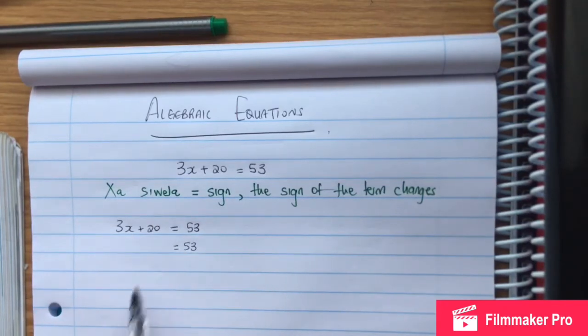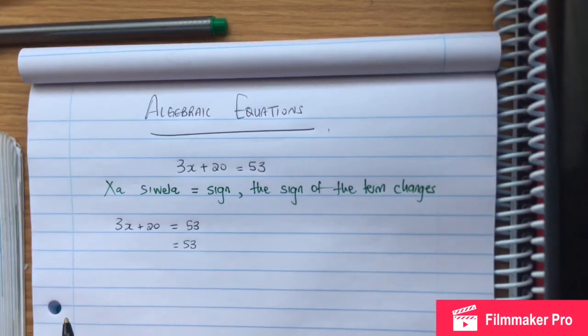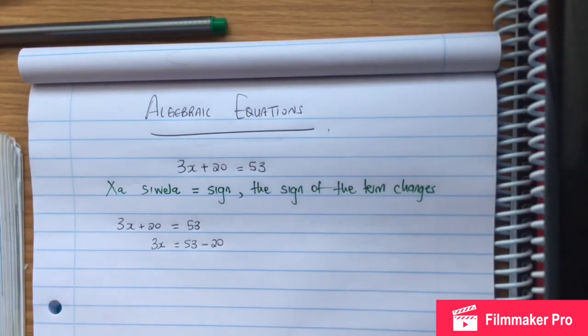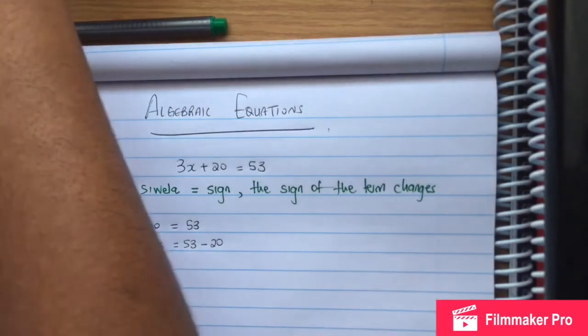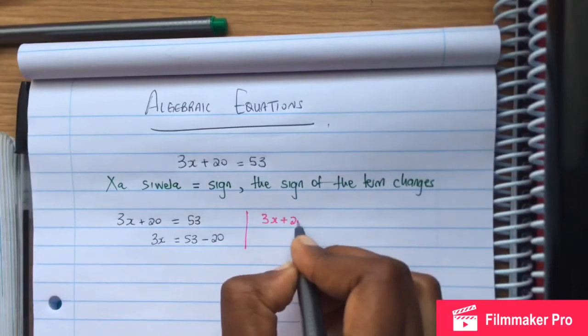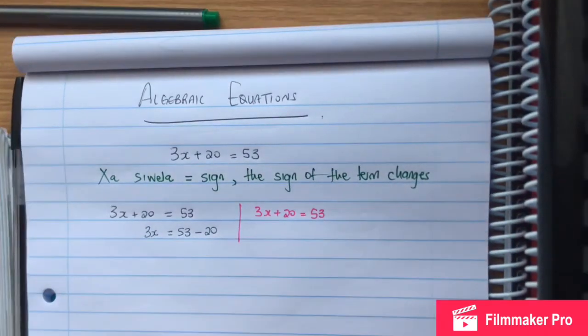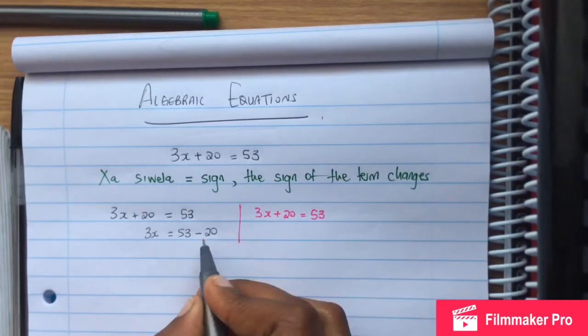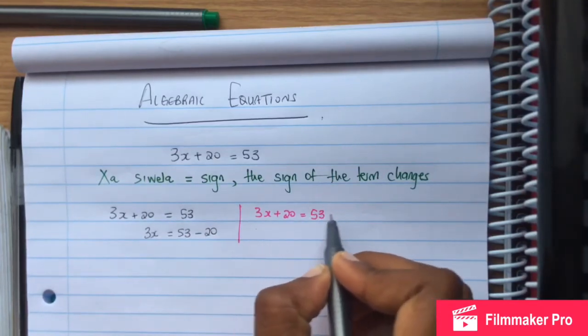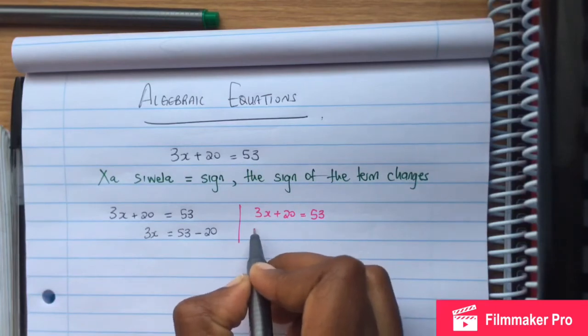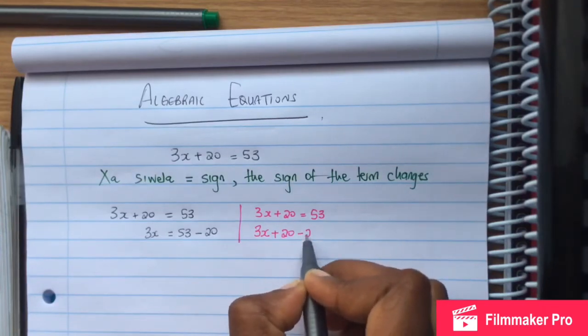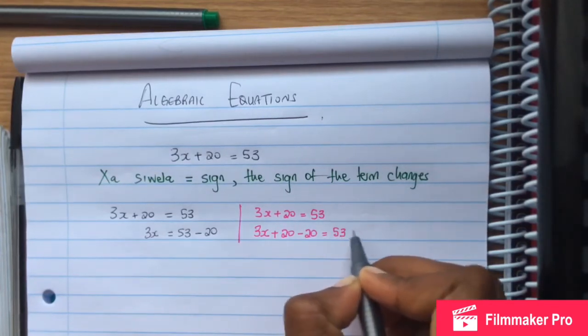The positive 20 needs to move to the other side, so we make it negative. It becomes minus 20. So we have 3x. The reason we do this minus, when it crosses it changes sign.